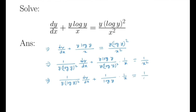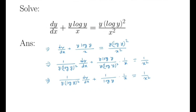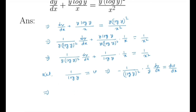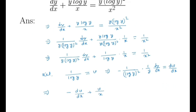This equals 1/x². Now we'll make a substitution: let 1/log(y) = v. Then the derivative gives us 1/(log y)² · 1/y · dy/dx = dv/dx. By substituting, the term 1/(y·(log y)²) · dy/dx becomes dv/dx, so we get: minus dv/dx plus v/x is equal to 1/x².